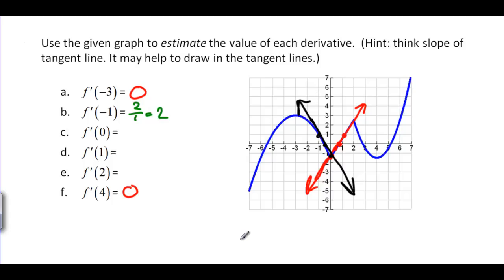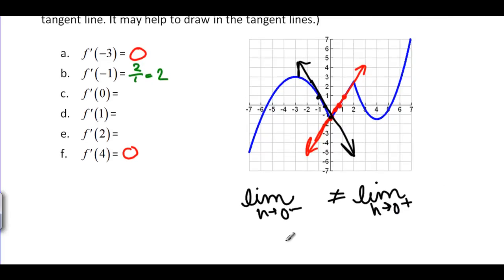So the limit as h goes to 0 from the left side is going to not equal the limit as h goes to 0 from the right side. Or we can write this in derivative notation saying that f prime from the left side at 0 does not equal f prime from the right side at 0. And just like with our regular limits, this is a limit. So if you get two different answers from the two different sides then the limit does not exist.